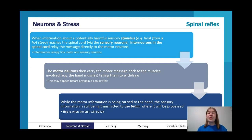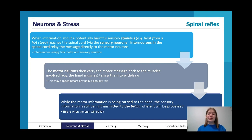The motor neurons carry the motor message back to the muscles involved, and often this is a withdrawal reflex — getting away from the source of danger — which can happen before any pain is actually felt. While the motor information is being carried to the hands, the sensory information is still being sent to the brain to be processed, causing the pain response. In a higher-mark spinal reflex question, there can be a mark for recognizing that although the brain doesn't make the decision, information is still sent to it.